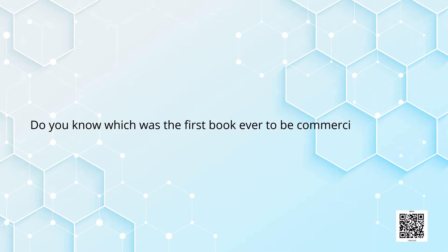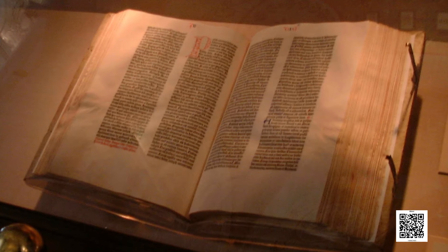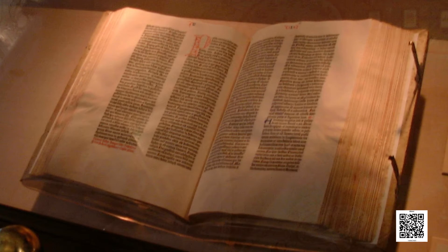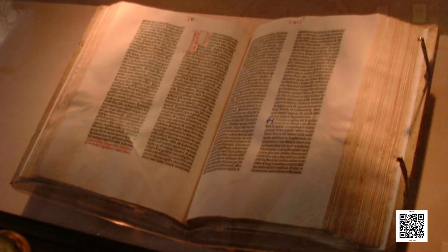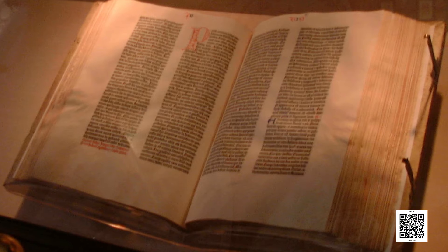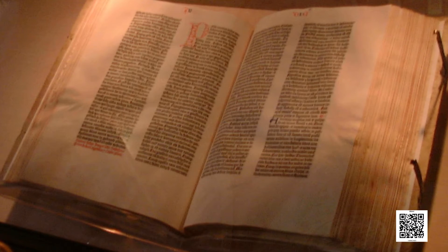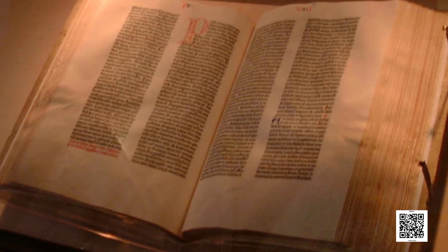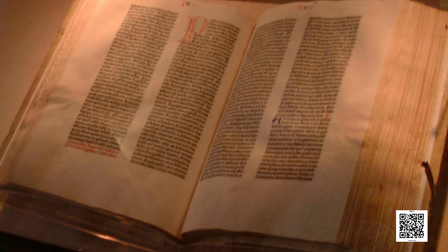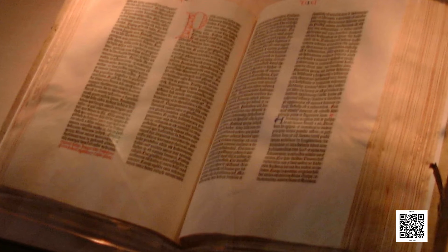Do you know which was the first book ever to be commercially printed? It was a 42-line version of the Bible, known as the Gutenberg Bible. It was printed in the 1450s and started the printing revolution and the print culture, which became very significant in the history of mankind. So let's find out more.